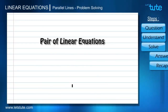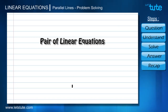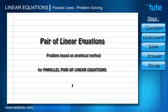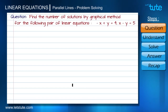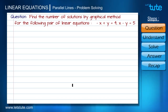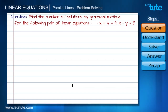Hi everyone, welcome to the problem solving session of pair of linear equations. Here we are going to solve a problem based on graphical method for parallel pair of linear equations. The question says: find the number of solutions by graphical method for the following pair of linear equations: -x + y = 4 and x - y = 5.